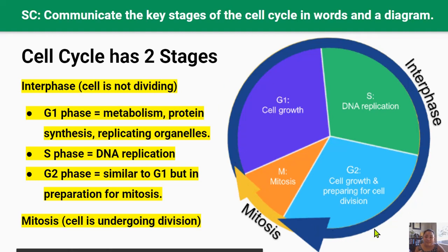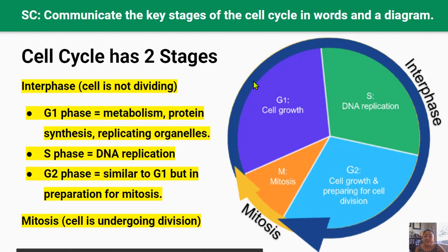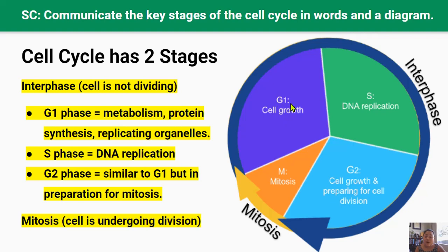The cell spends the majority of its time in the interphase part of the cell cycle, which can be divided further into three sub-phases. The first sub-phase is called the growth phase or the G1 phase. During this time the cell carries out its functional role, including carrying out its metabolic processes — still making ATP, synthesising proteins, still making enzymes, and replicating or making more organelles like mitochondria.